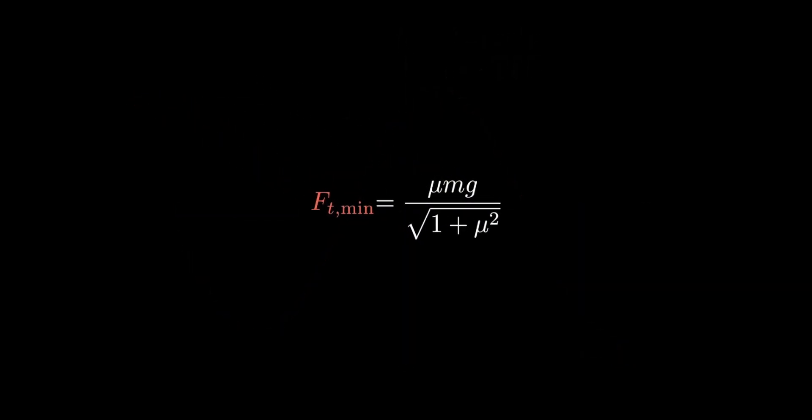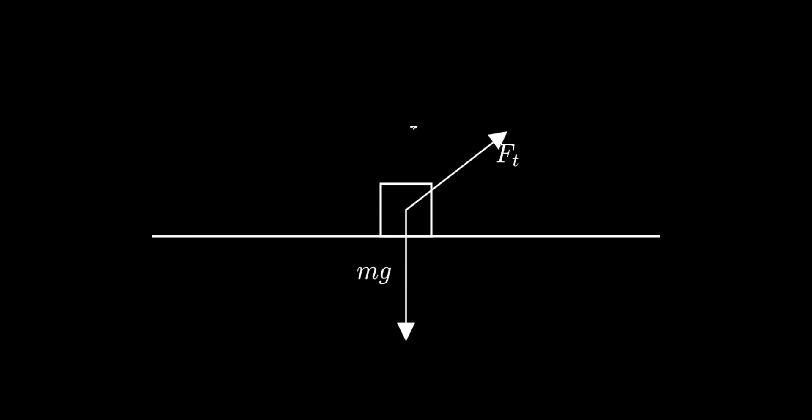However, there is a more elegant way to do this. We start with the same setup as before, except this time we keep the vectors the way they are. We can combine the normal force and the friction force together into a single force which we call Fground, the force from the ground.